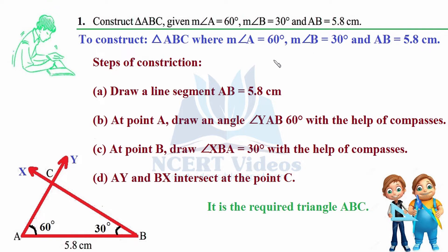We are studying the angle-side-angle (ASA) criterion of congruency of triangles — if two angles of a triangle and the side between those angles are given, we can construct a triangle that will always be congruent to its counterparts with the same dimensions. If two angles are given, you can easily find the third one, so the side need not be exactly between the two angles.